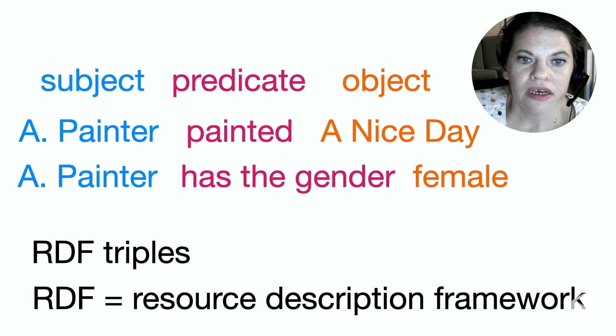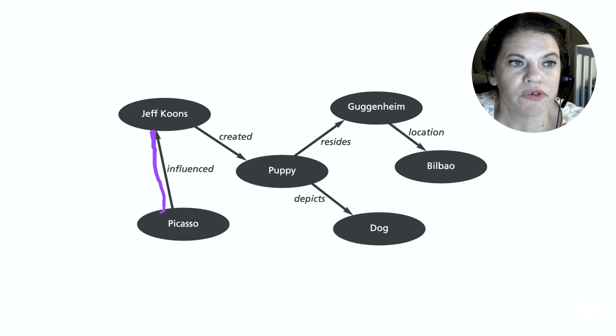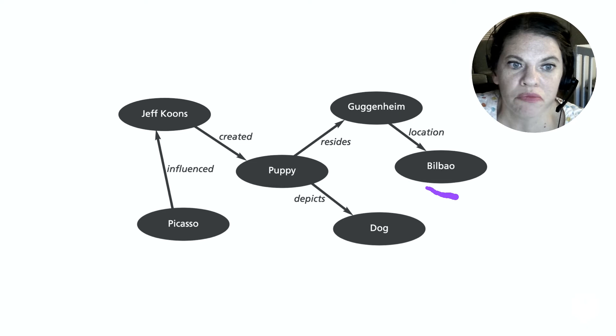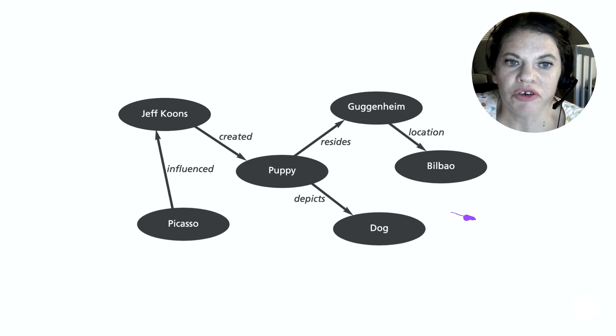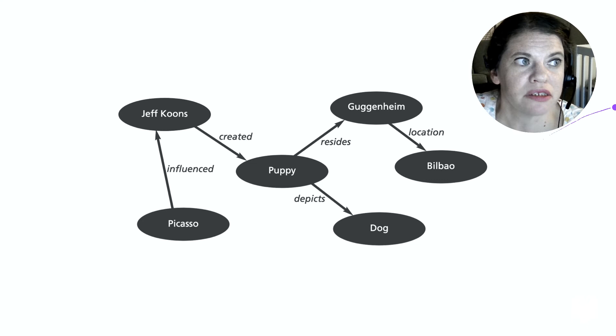As you build your graph out it will look something like this. Notice how every relationship can be expressed as a triple: Picasso influenced Jeff Koons would be one statement; Jeff Koons created Puppy is another; Puppy resides at the Guggenheim; and Guggenheim is located in Bilbao. The graph is just a visual representation of the data, which is in fact stored as a bunch of statements, or triples.